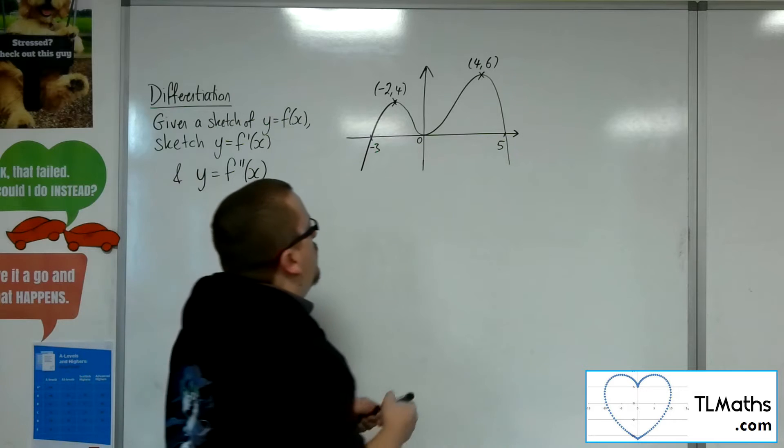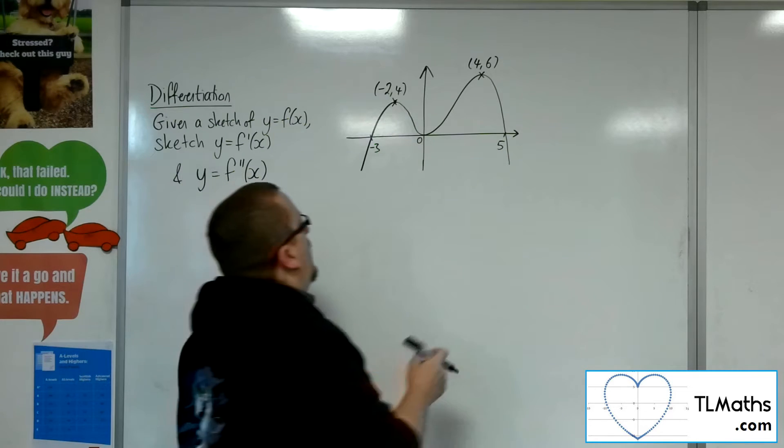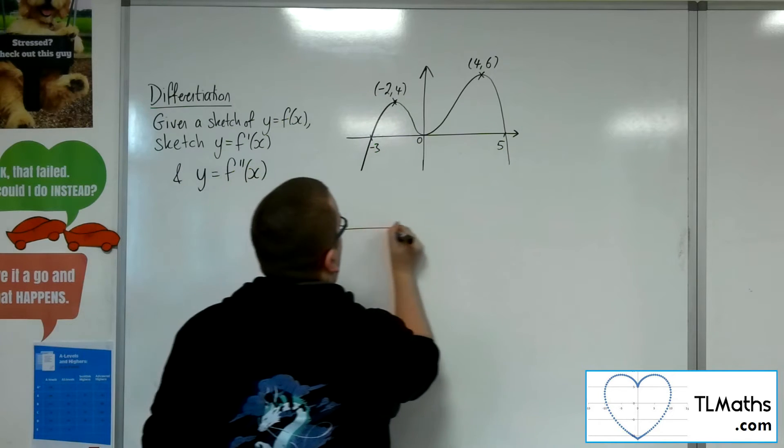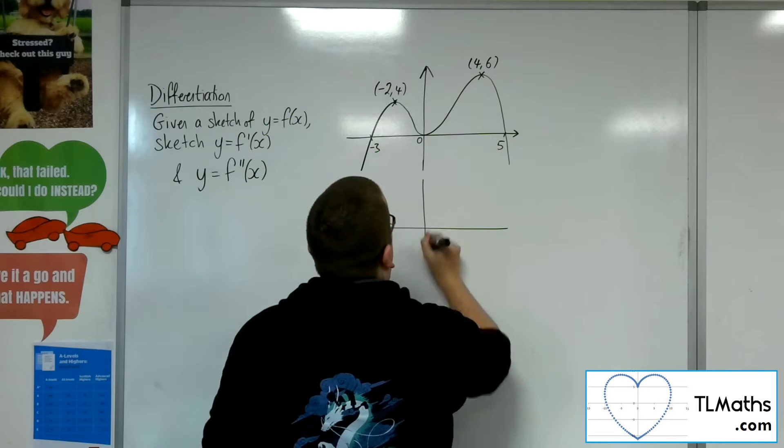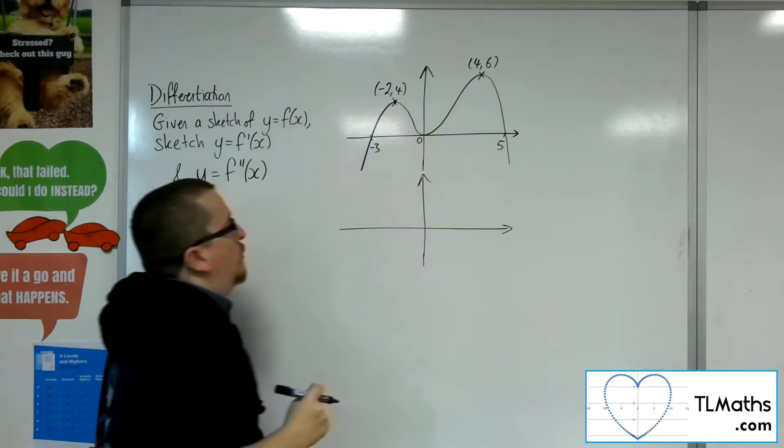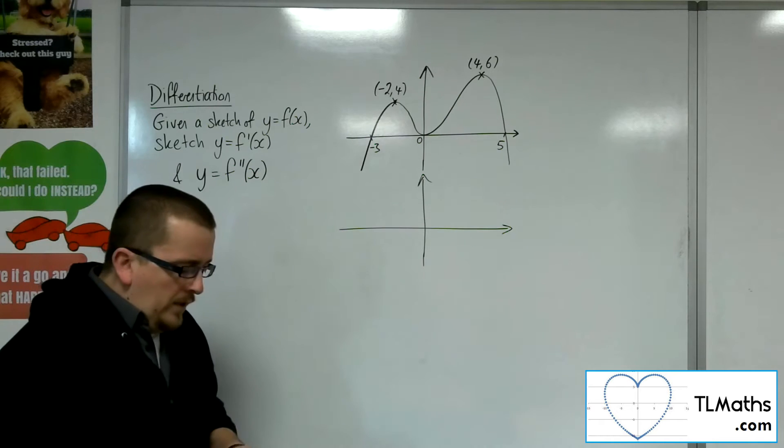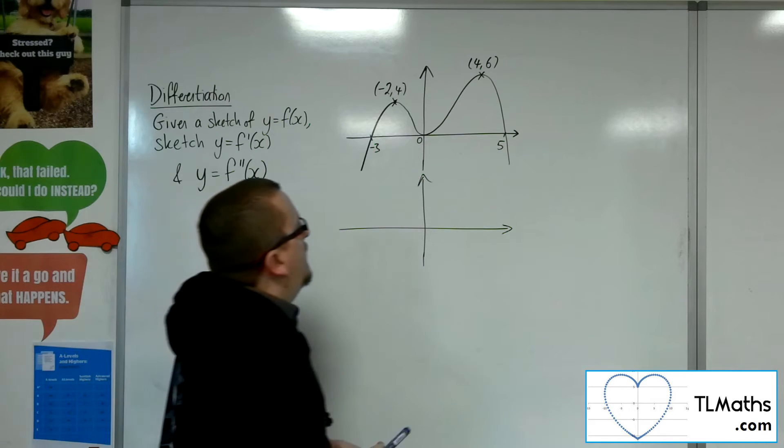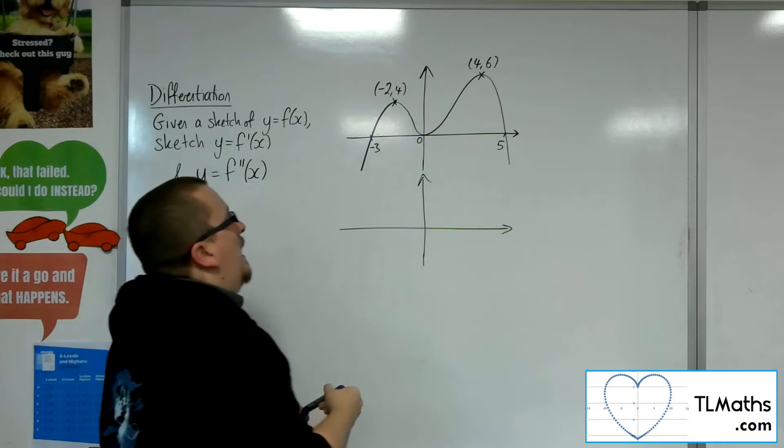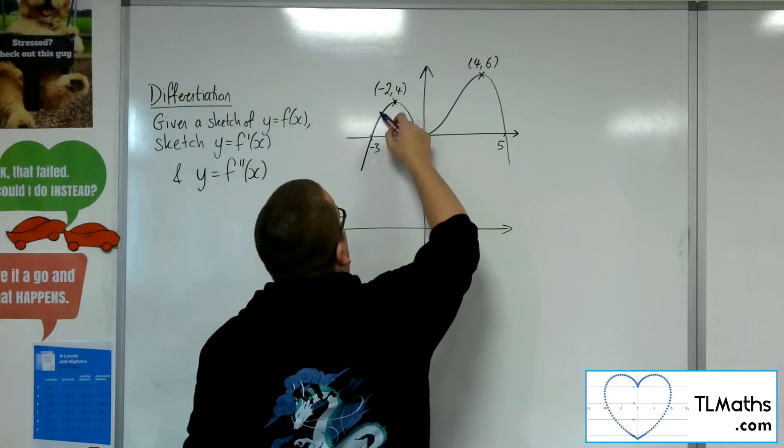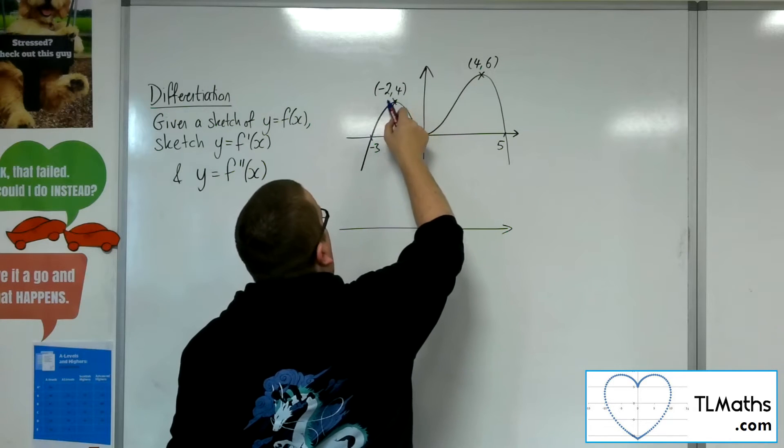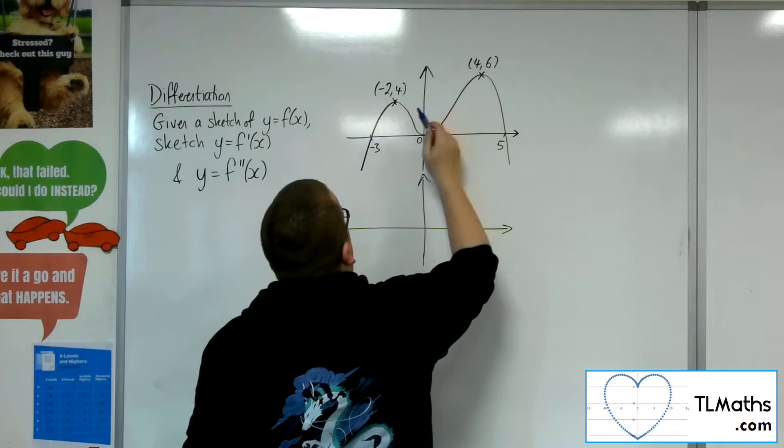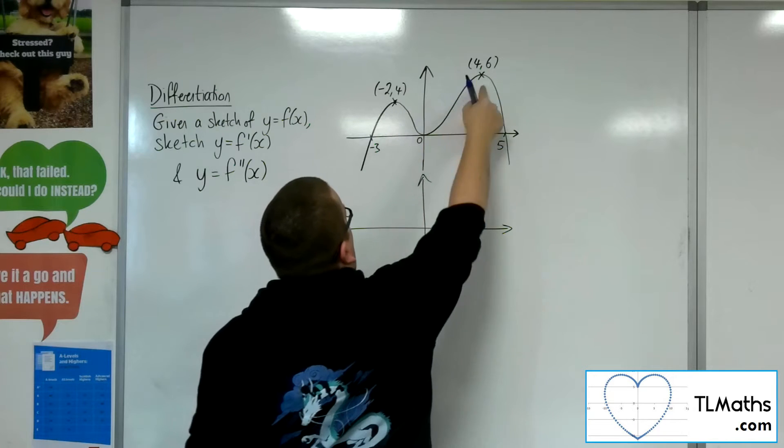So what you should probably do and get used to is drawing the graph directly underneath the one that you've got, so that then you can start thinking about: well, this curve's gradient function is zero at these stationary points - that one, that one, and that one.